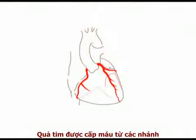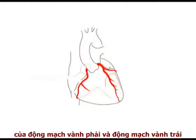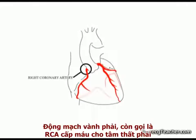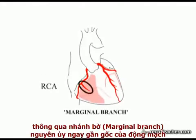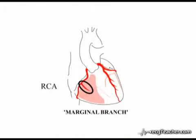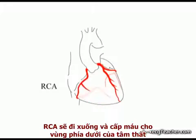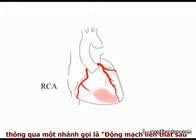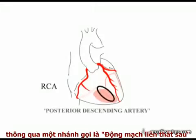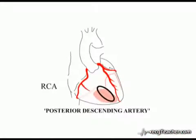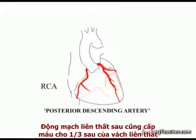The heart is supplied with arterial blood by the branches of the right and left coronary arteries. The right coronary artery or RCA supplies the right ventricle through a marginal branch which arises near the origin of the vessel. In 90% of individuals, the RCA then goes on to supply the inferior surface of the ventricles through a branch called the posterior descending artery. This posterior descending branch also supplies the posterior one-third of the interventricular septum.